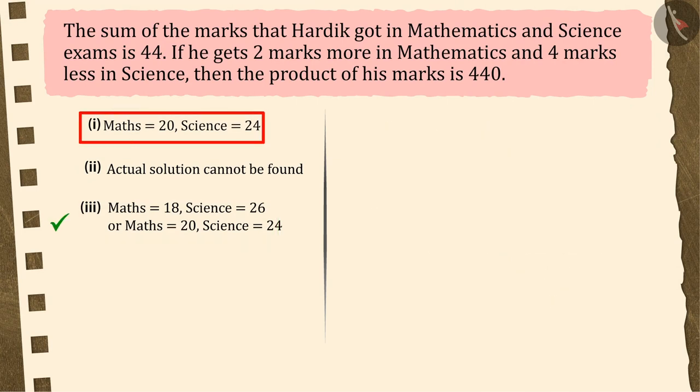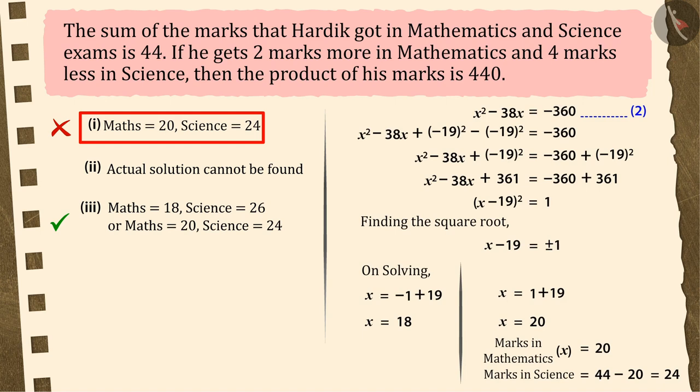If you have chosen the first option, it is a good try, but this answer is wrong. Because when you take the square root of x minus 19 square equals 1, then you only consider that x minus 19 equals plus 1 which gives 20 marks in maths and 24 in science. But you have forgotten that x minus 19 equals minus 1 is also a second possible solution. Note that we have to find the value of x for both positive and negative 1. Therefore, option 1 is incorrect.